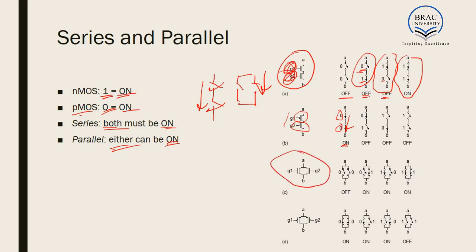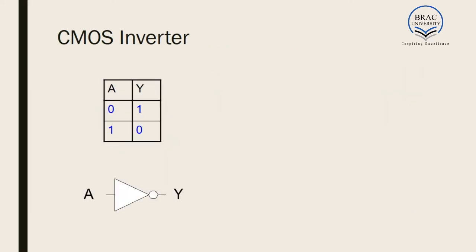What if the circuit is parallel? In this case, if both inputs are zero, both are off and no current flows. If any one of them is one, current flows through either branch or both branches. So either G1 has to be one or G2 has to be one. Similarly, in case of parallel PMOS, since zero turns them on, either G1 has to be zero or G2 has to be zero for current conduction. If both are one, no current is conducted.